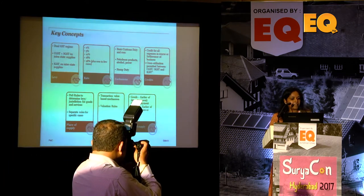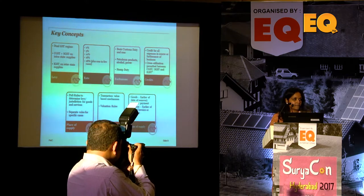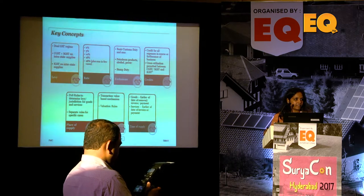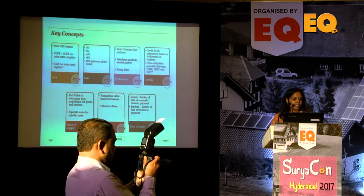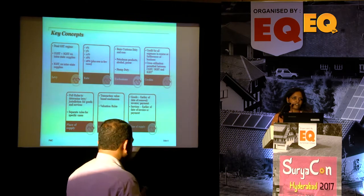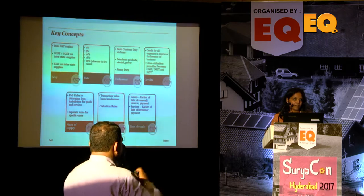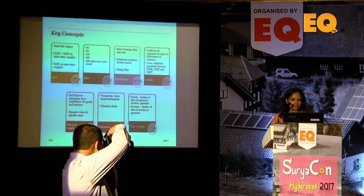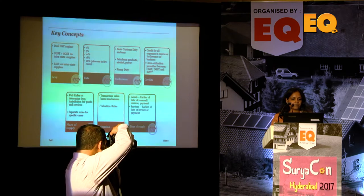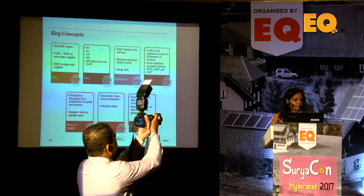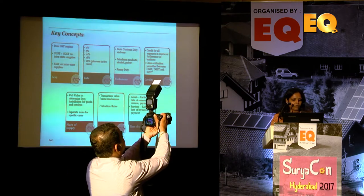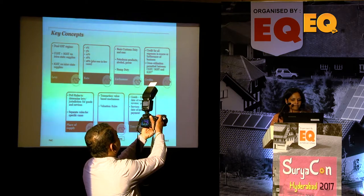Broadly, the GST rates have been categorized into five buckets: nil rate, 5%, 12%, standard rate of 18%, and 28%, with an additional CESS on certain SYN goods. What remains outside GST is basic custom duty, petrol, alcohol, power, and land-related transactions.